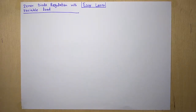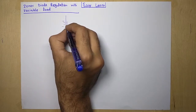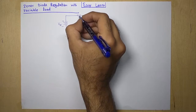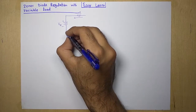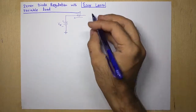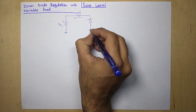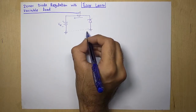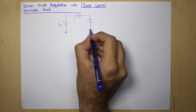First of all, let's draw the diagram. This is the positive and negative battery — a voltage source V input. There is a resistance connected in series for limiting purposes and for the safety of the diode. This is the resistance, and this is the current direction. This is the ground terminal. Ground is basically a common point — for example, this point and this point are common, meaning there is a direct connection between them.